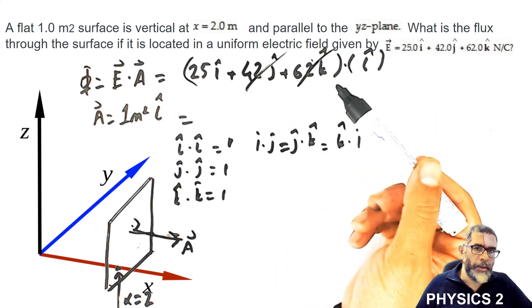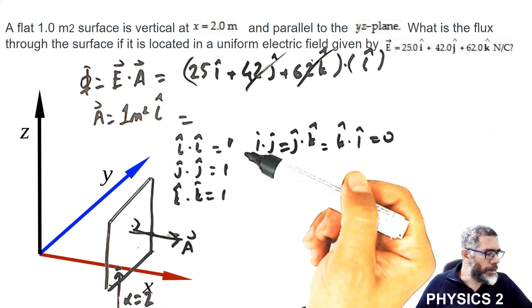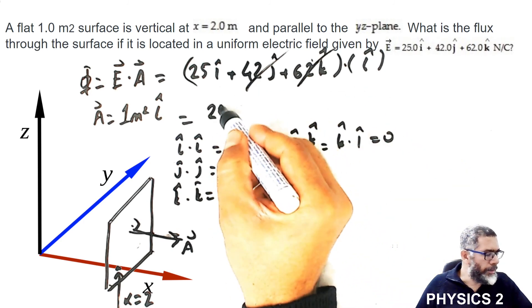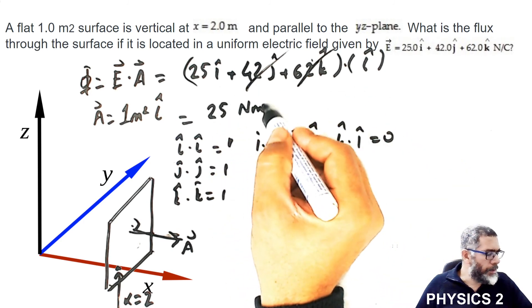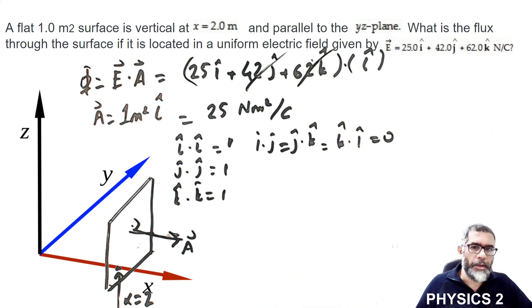These components of the electric field will not give any contribution to flux. We will have 25 newton meter square divided by coulomb as the unit for the flux. That's it.